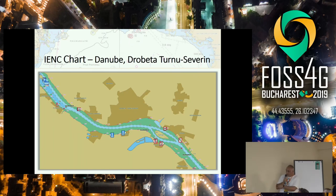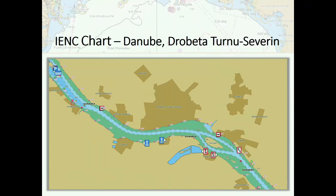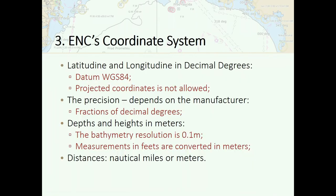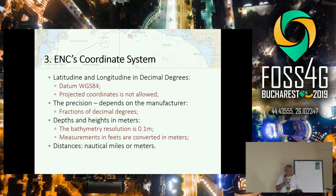This is an example of an inland chart — it's from Robeta to Severin in Romania. About the coordinate systems used inside the ENCs: we use WGS84, in decimal degrees. The precision is described in the metadata of the chart, as fractions of decimal degrees.